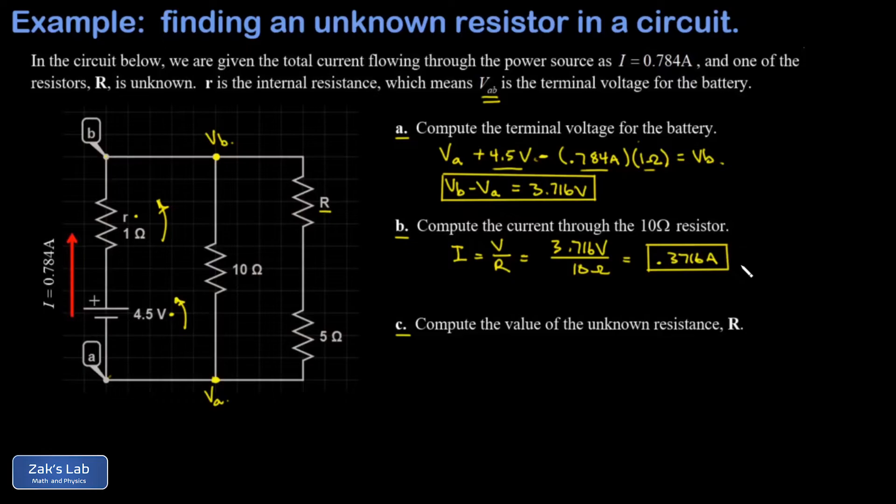Now, the whole reason this is useful is that it allows me to compute how much current is flowing in the right branch of the circuit. We had a total of 0.784 amps flowing in this circuit. We just figured out how much flows down this middle branch when the current splits. That's 0.3716 amps. And the leftover amount is the amount flowing through the right branch.